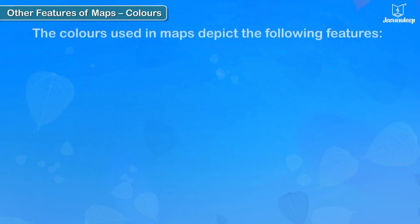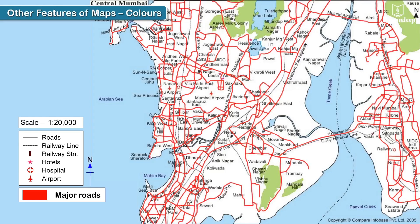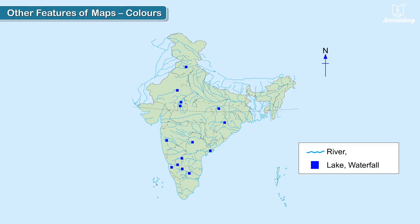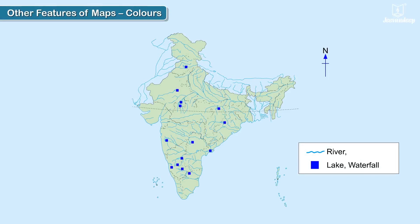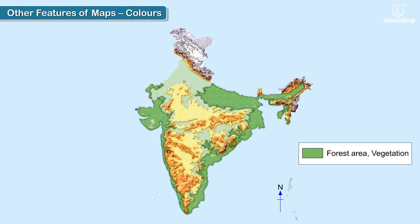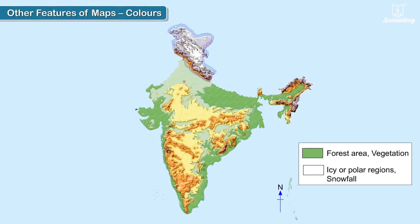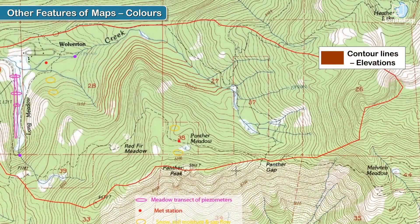Colors: The colors used in maps depict the following features. Red represents major roads. Blue represents water bodies such as rivers, lakes, and waterfalls. Green represents forested areas and vegetation. White is used to show icy or polar regions, or areas that receive snowfall. Brown represents contour lines and elevations.